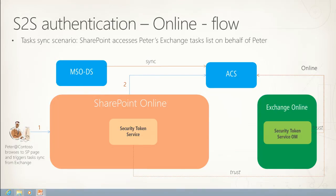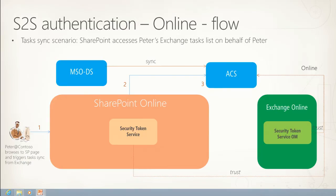ACS as the trust broker first validates that it is indeed SharePoint Online, then checks whether the Exchange Online endpoint it wants to talk to is known and that the Exchange Online app principle exists. Once both are validated, the trust broker issues an S2S token to SharePoint Online that is intended specifically for that particular Exchange Online endpoint — you cannot use the same token to talk to some other app principle.